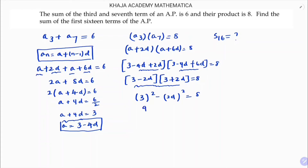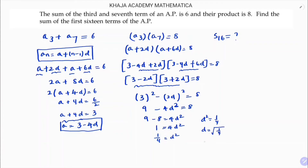So 3² − (2d)² = 8, which gives 9 − 4d² = 8, so 4d² = 1, meaning d² = 1/4. Therefore d = ±1/2.